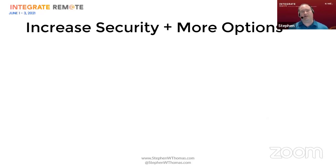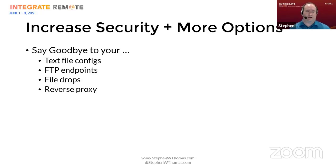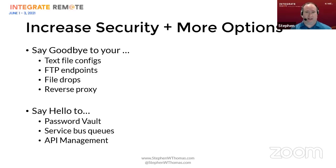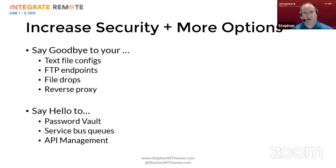Leveraging BizTalk and Azure together gives us increased security and more options for communicating with trading partners. Right now many of us have text-based config files with passwords, unsecured FTP endpoints, file drops, and reverse proxies. These can be replaced with Azure services such as Key Vault to secure secrets, Service Bus queues for reliable communication, and API Management to secure and control external endpoints. These are all available today.